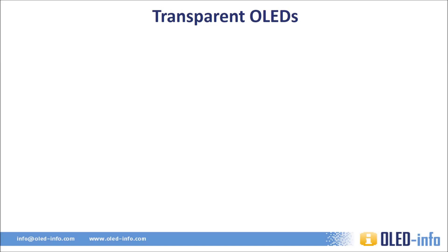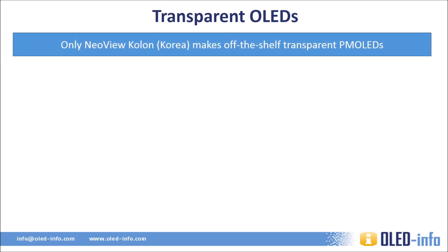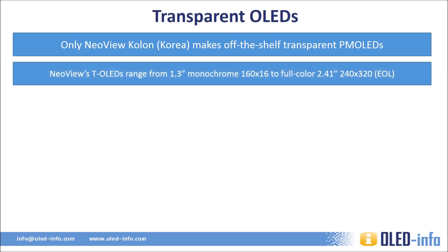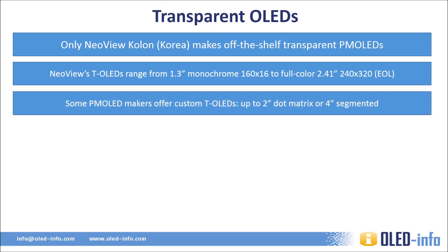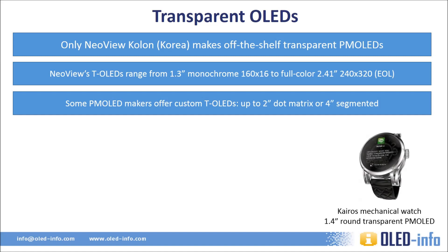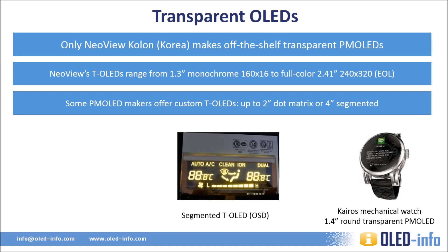Transparent OLEDs are now entering the market, but only very simple small displays are available in very limited quantities. The only company that produces off-the-shelf transparent OLEDs is Korea's NeoView Cologne. The company offers several transparent OLEDs from 1.3 inch to 2.4 inch full-color ones, which as far as we know is actually no longer in production. Some passive matrix OLED makers offer custom-made transparent OLEDs — typically up to 2 inch for dot matrix displays or 4 inch for segmented displays. This interesting Kyros smartwatch integrates a mechanical watch with a small transparent OLED on top. And here's a sample segmented transparent OLED made by one-stop display, OSD.